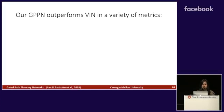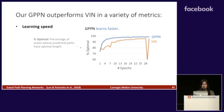We found that GPPN outperforms VIN in a variety of metrics. First is learning speed. Here's the learning curve — on the y-axis we have percent optimal, which is the percentage of states whose predicted paths have optimal length, and on the x-axis we have the number of training epochs. GPPN learns faster, and its learning curve also looks more stable. On the other hand, VIN performance oscillates between epochs.